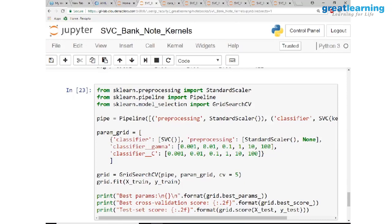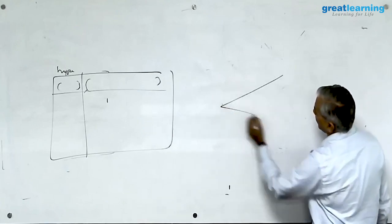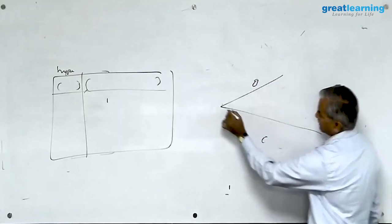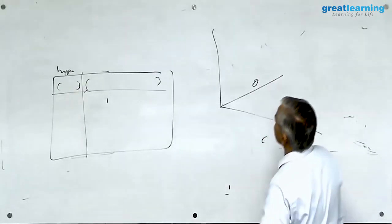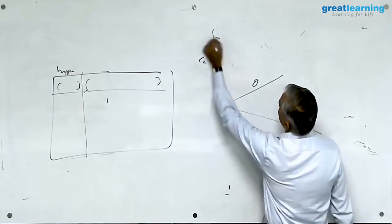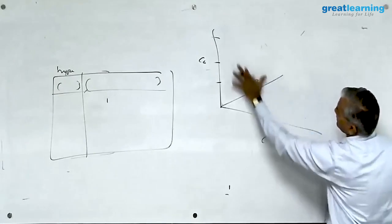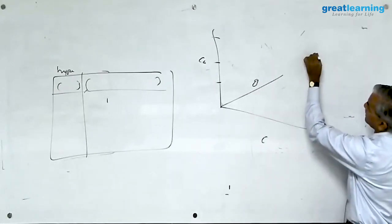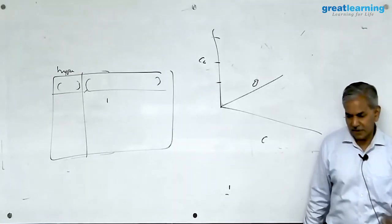What this is going to do is, what this grid search is going to do is, I can show you only three dimensions. So it is going to have one dimension called C, other dimension called gamma, and this dimension called, let us take it as classifier, different classifiers RBF, poly and all. Now amongst all these combinations in this mathematical space, it is going to find out for you what is the best combination which gives you minimal error in your data, in your test.